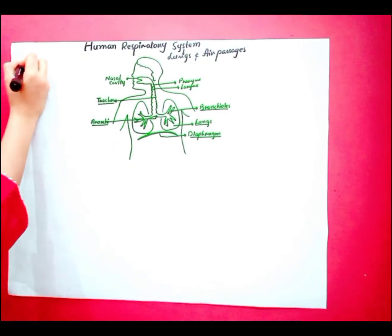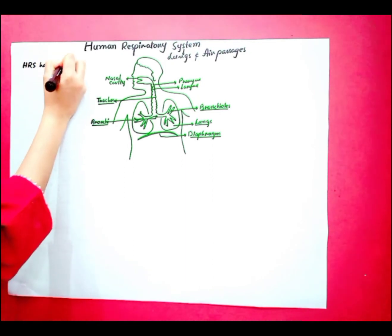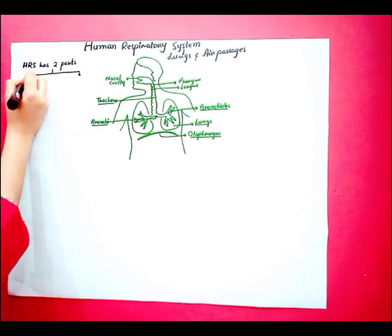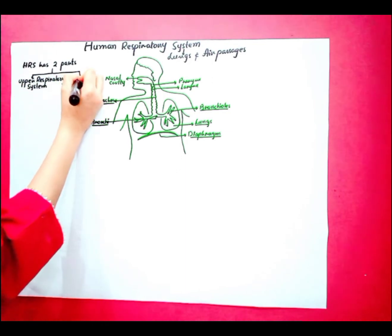Human respiratory system has two parts: upper respiratory system and lower respiratory system.